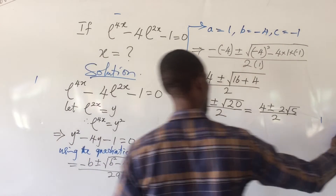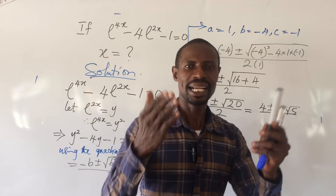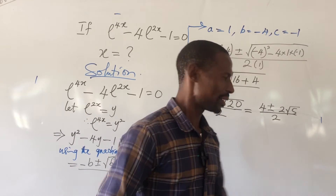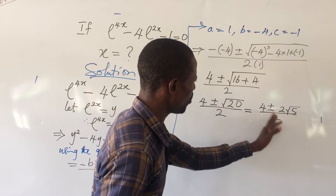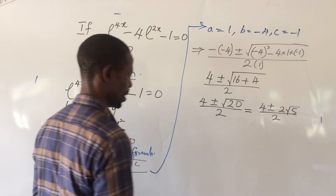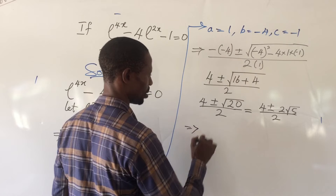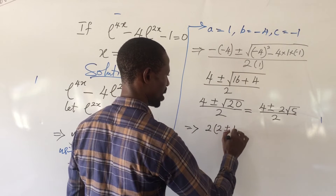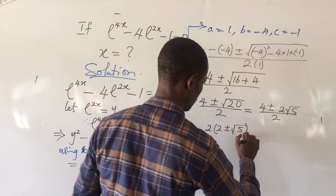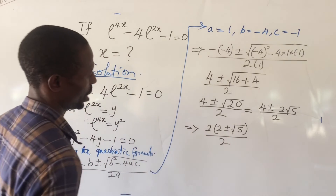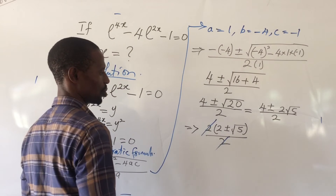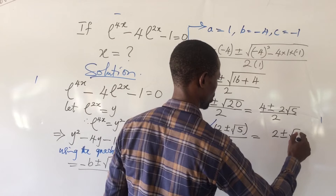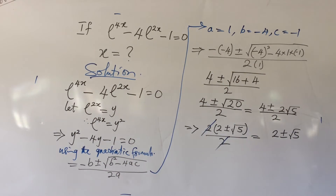Any confusion? No. Before we proceed, if you are new to this channel, kindly subscribe and turn on the bell notification button because we drop wonderful videos every day. Now, we are having a 4 and a 2 at the top, so we can factor out 2. Doing that gives us 2 into the bracket 2 plus or minus root 5, all over 2. The two at the top cancels the two at the bottom, leaving us with y equals 2 plus or minus the square root of 5.